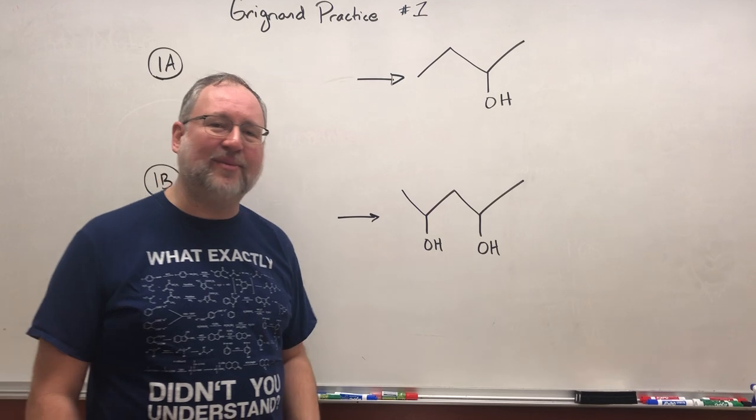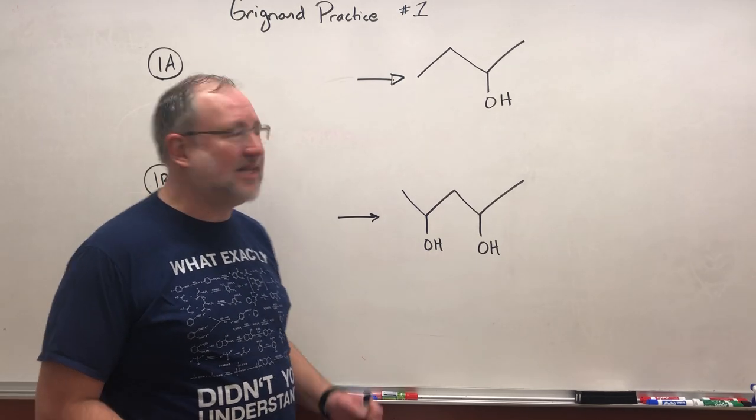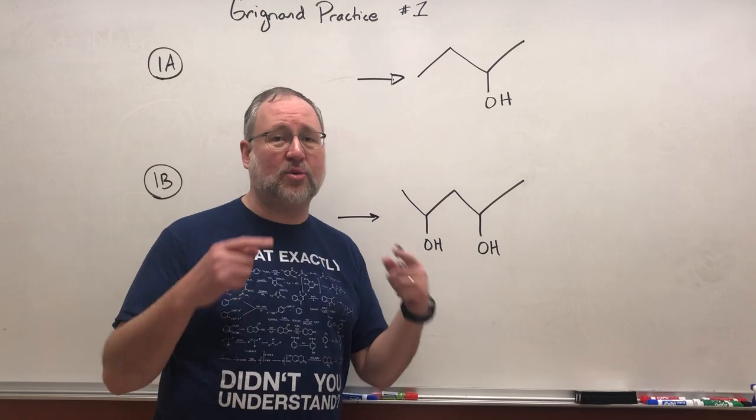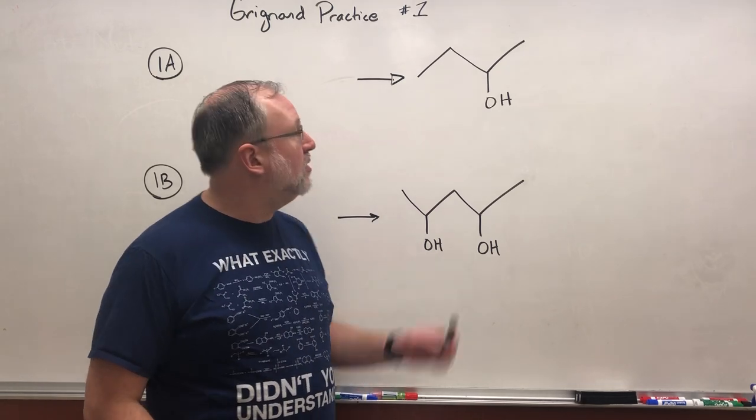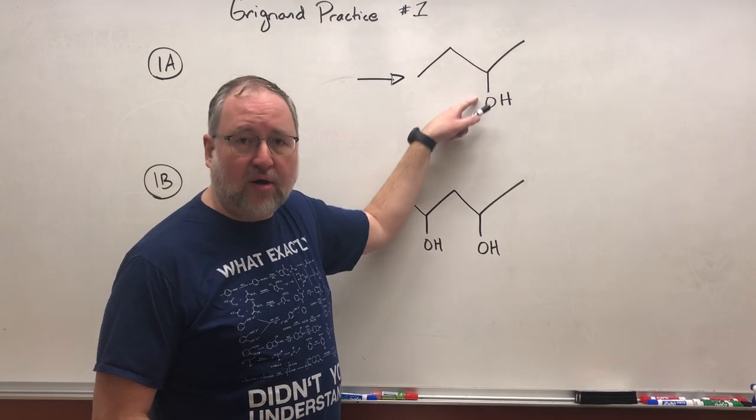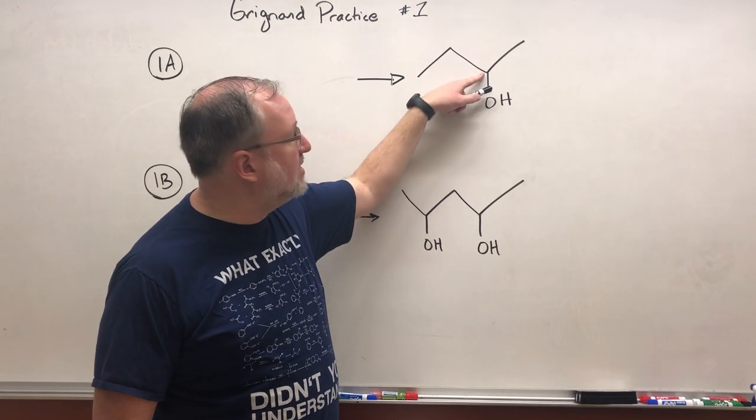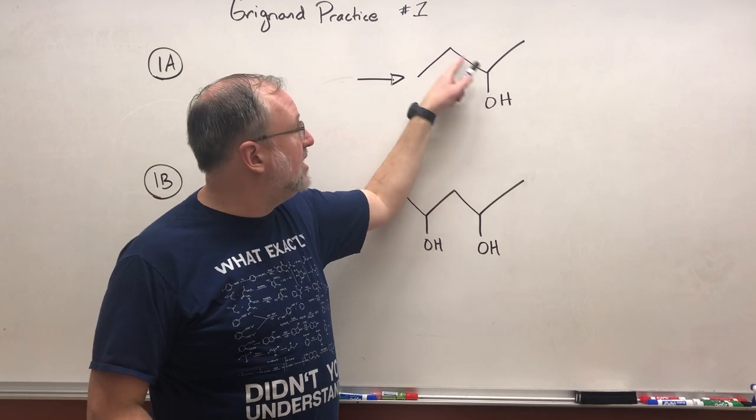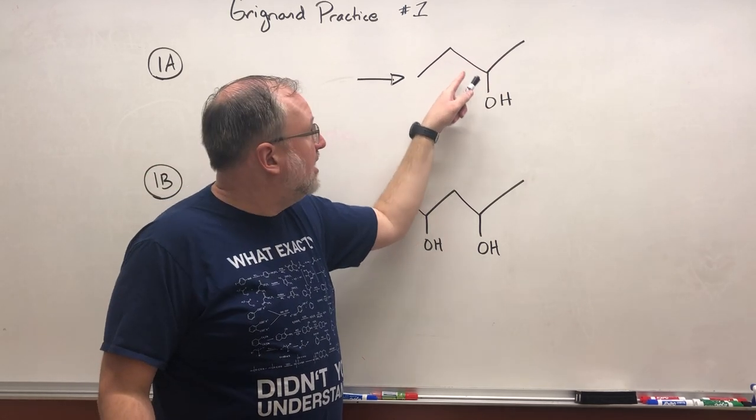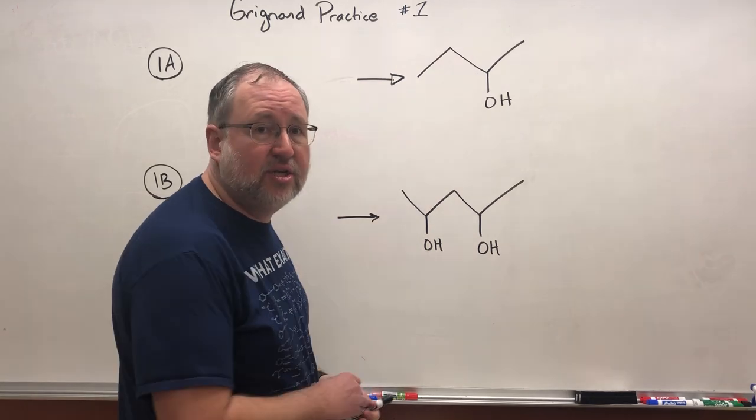All right hopefully you had time to work on those answers. Let's look at this. When you're thinking about Grignard remember the big idea is we're making new carbon-carbon bonds which means over here in the product right at the site of this alcohol that's where the electrophile was, this carbon right here. One of these bonds must be new and it could actually be either one.